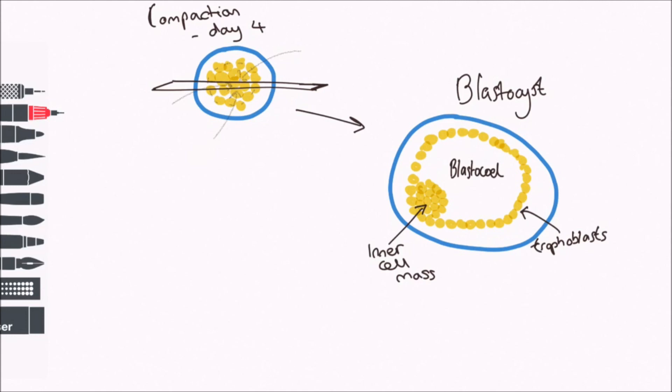Flattened outer cells of the blastocyst are called trophoblasts, and these will become the placenta and fetal membranes. The inner cell mass cells are called embryoblasts, and will become the fetus.